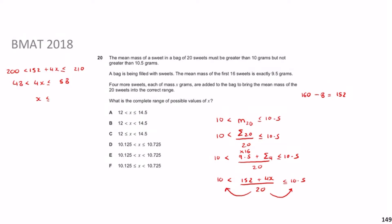So 48 divided by 4 is 12, and 58 divided by 4 is 14.5. Remember: when you multiply or divide by a negative number, the inequality signs flip — that's an extra point about inequalities, but we don't need it here. The answer that matches is A.